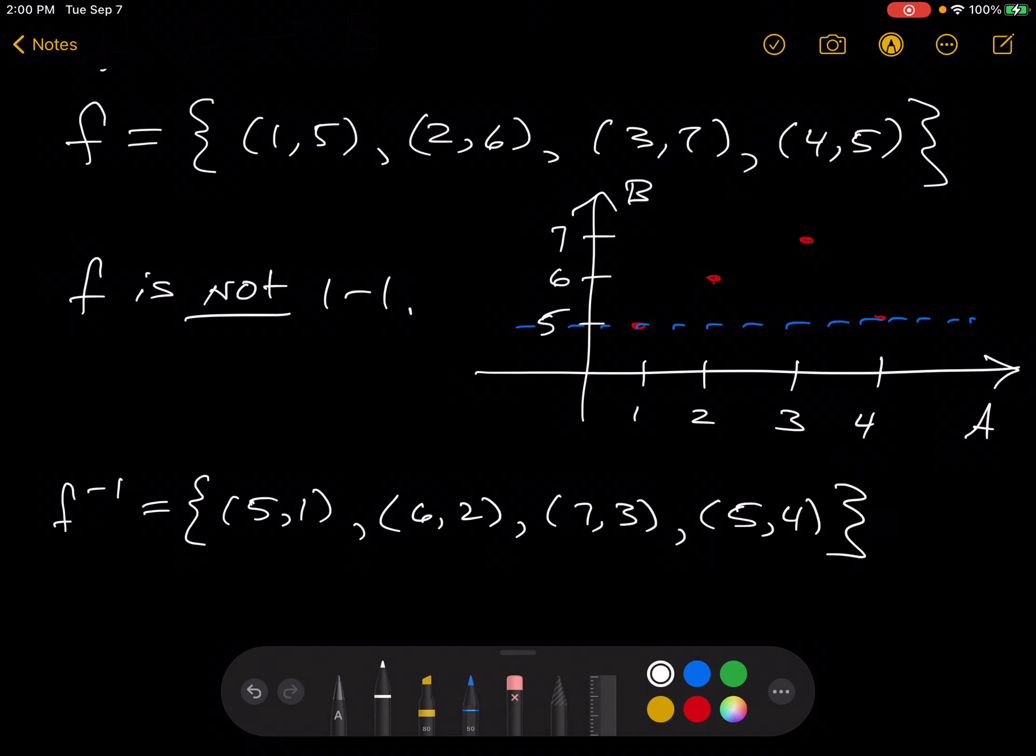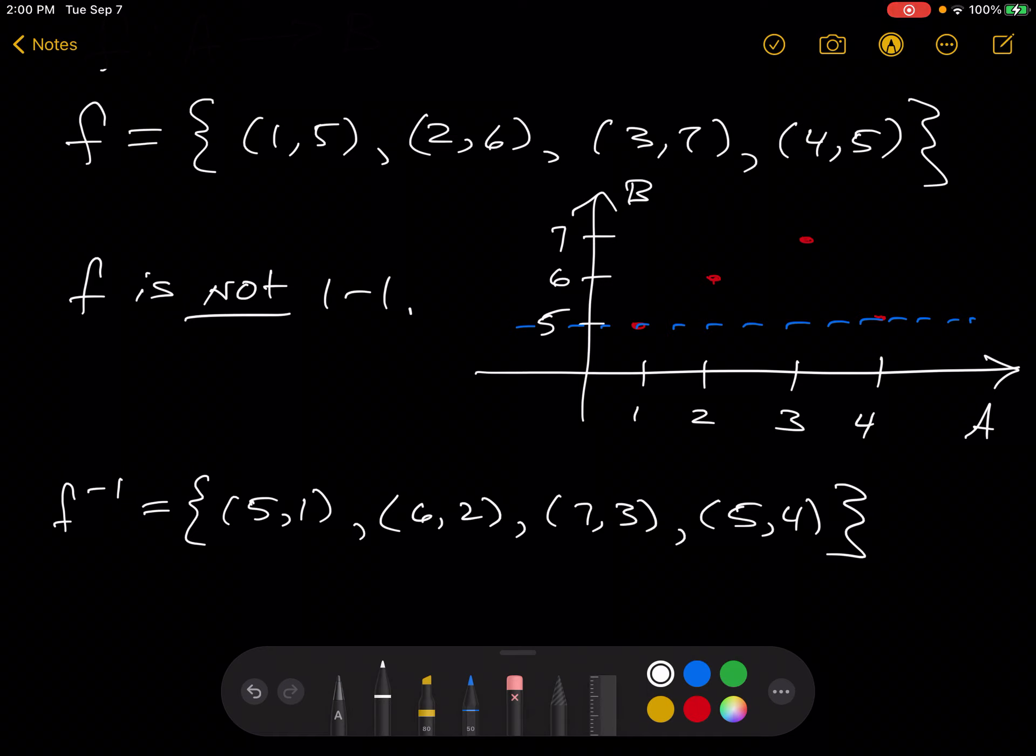Let's check: 5, 1, that's the flip of 1, 5. 6, 2, that's the flip of 2, 6. 7, 3, that's the flip of 3, 7. And 5, 4, that's the flip of 4, 5.